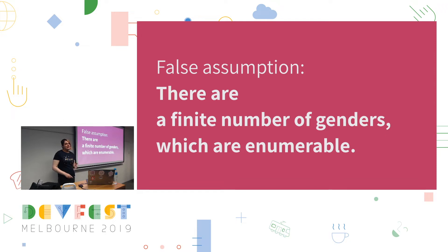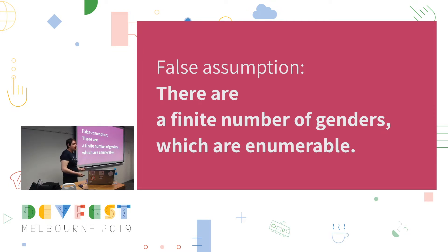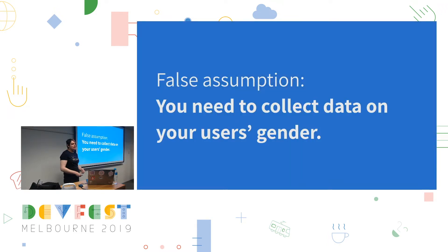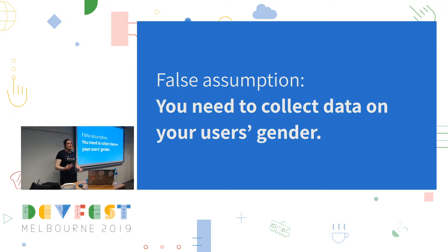So if you're collecting gender data, you really need to ask yourself: what for? Because like most types of data, the use case and how you're going to be using the data is going to affect how you collect it, what options you give. But actually, if you start to ask yourself what you're collecting gender for, you'll probably run into the false assumption that you need to collect your user's gender at all. It's become a bit of a default. But in many cases, it's completely unnecessary, and in many cases you won't be using that data — or worse, you won't be using it effectively.